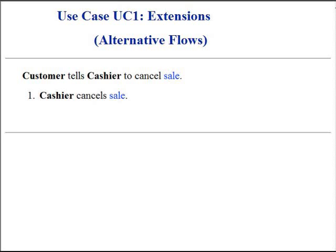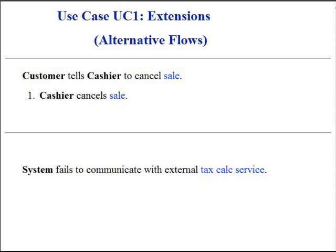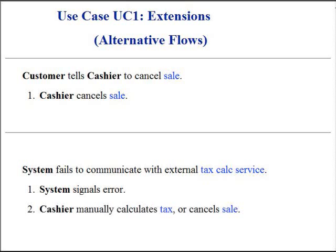In an alternate flow: customer tells cashier to cancel sale, and cashier cancels the sale. Also, the system may detect failure to communicate with the external tax calculation system service. System signals an error, and the cashier manually calculates the tax, or cancels the sale.